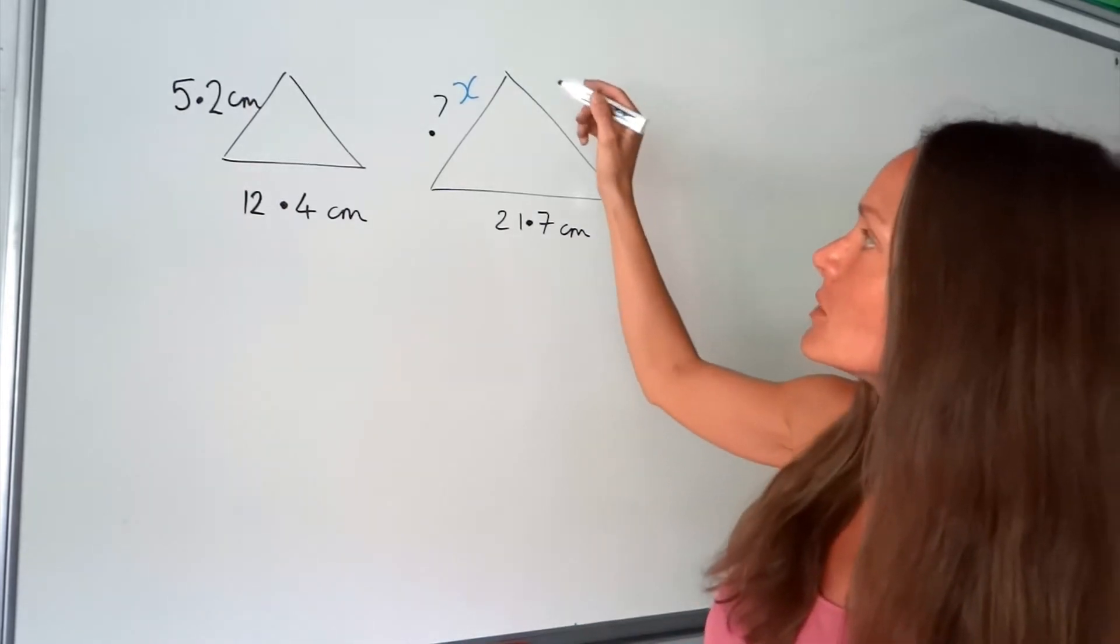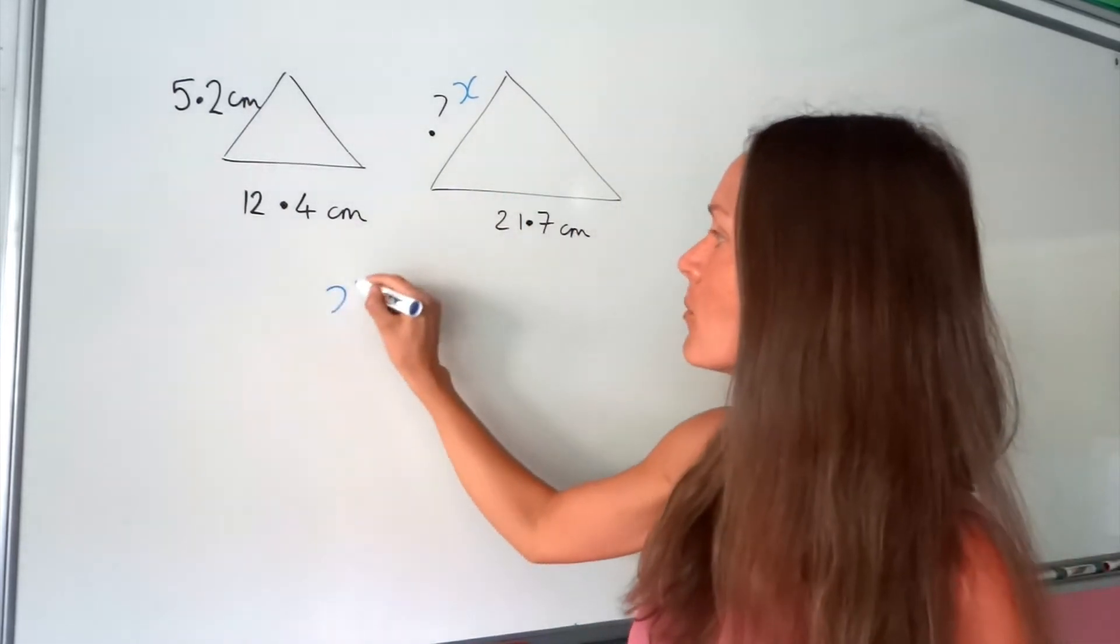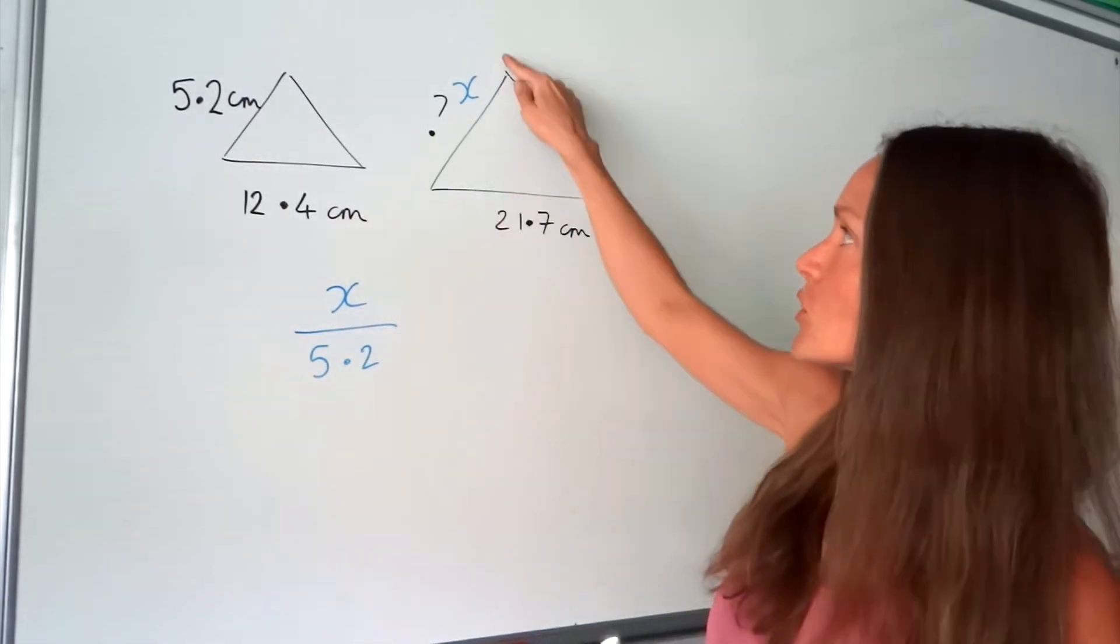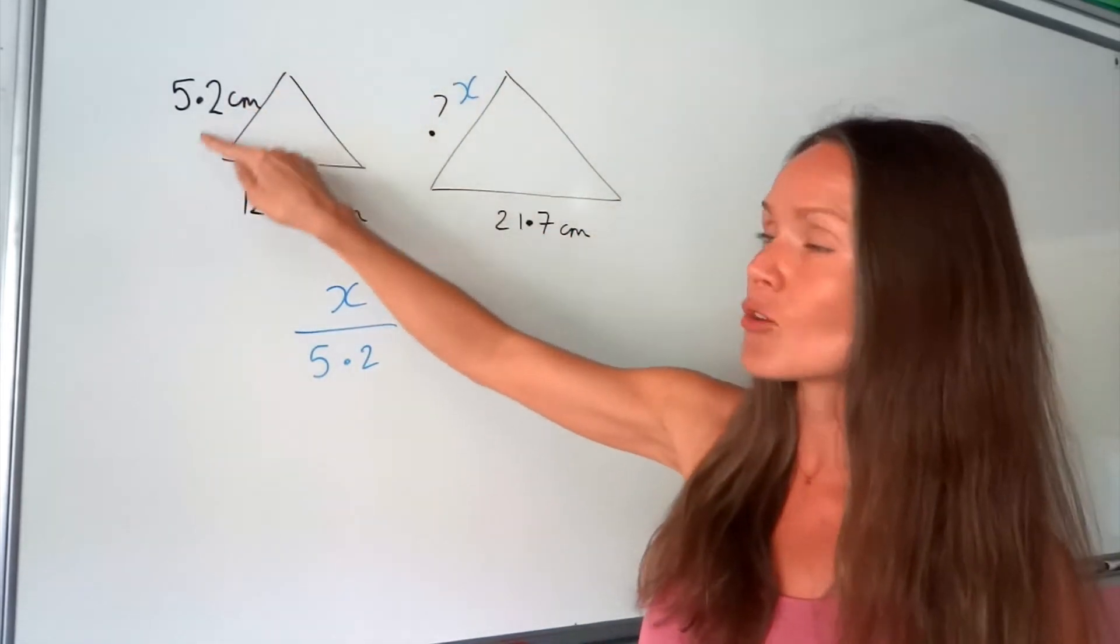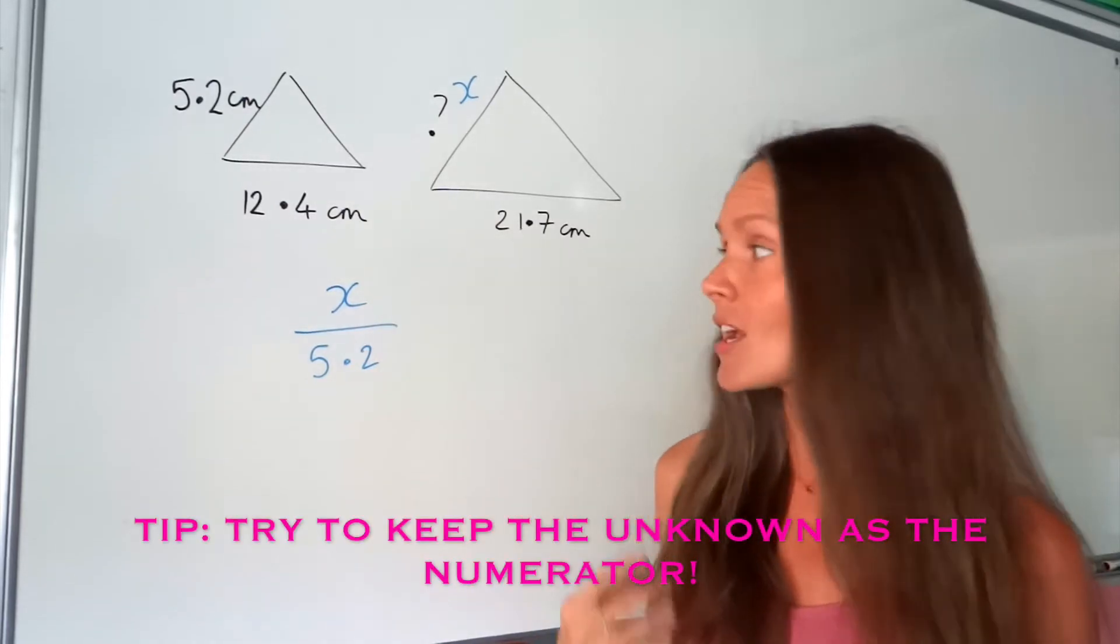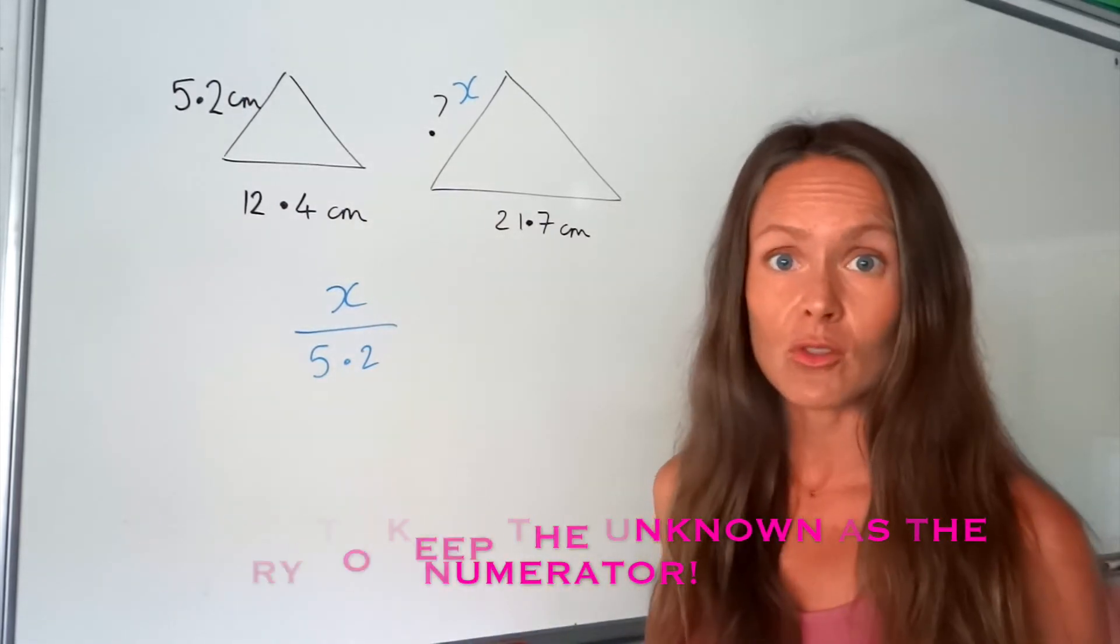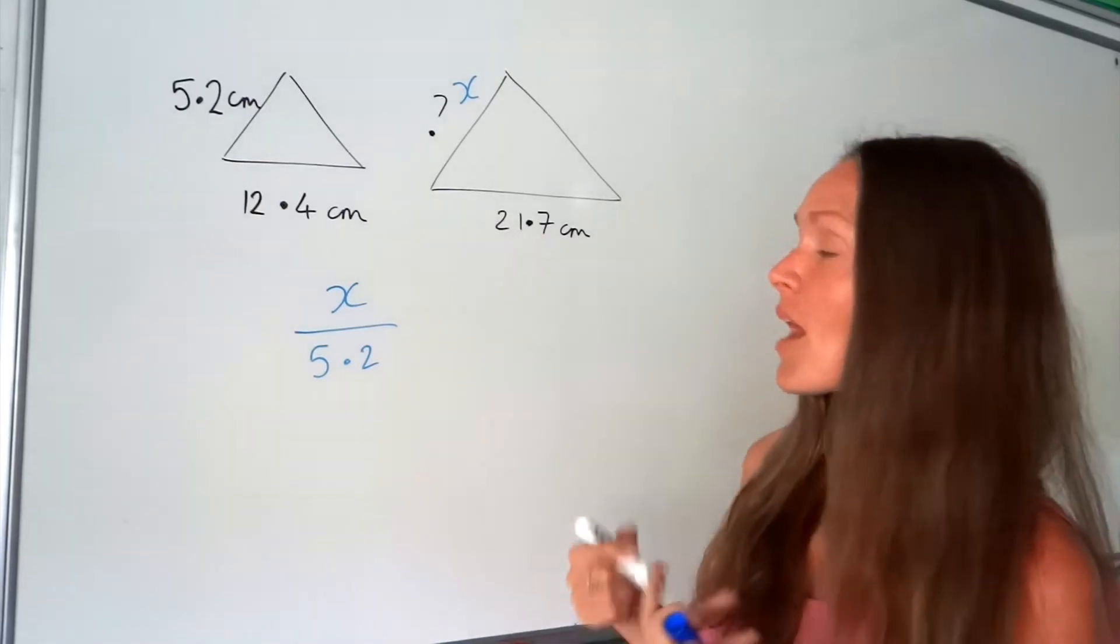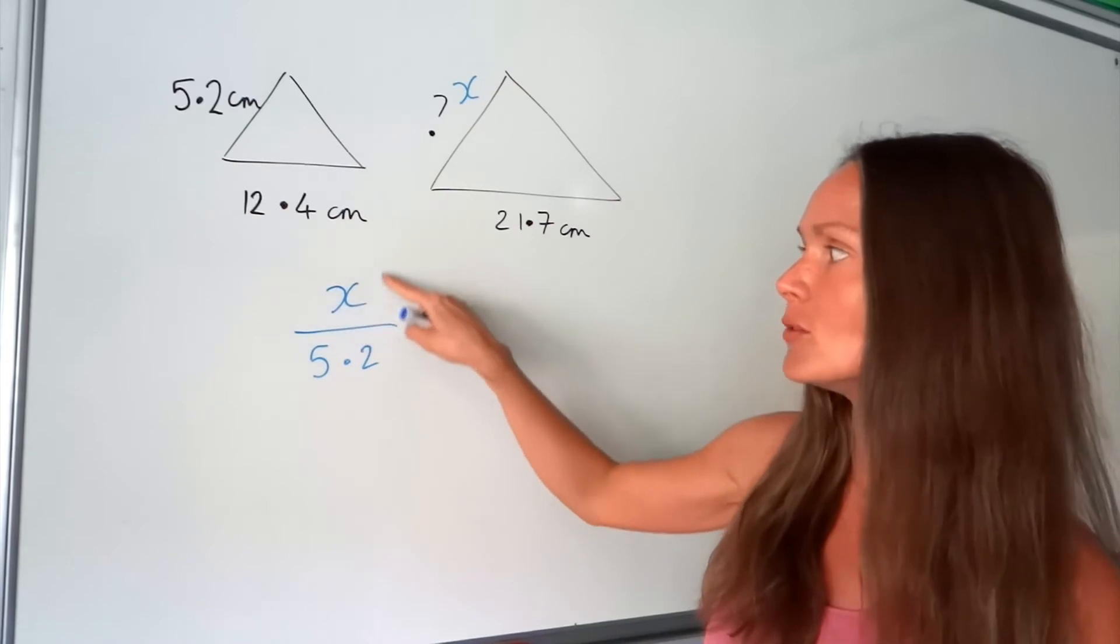So I'm going to divide x by 5.2 since that is the side that corresponds to x in the smaller triangle. Notice how I'm doing x on top. That just makes the equation later easier to solve and rearrange. But it doesn't matter if you do it the other way around but I think it's easier if you put the unknown as the numerator.